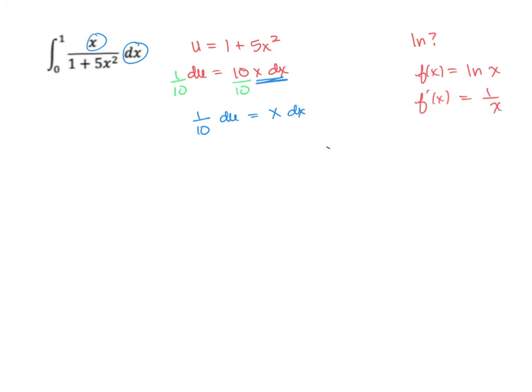So right now, we have 1 over 10 du equals x dx. I'm going to rewrite this integral. You do not have to rewrite the integral, but I'm going to rewrite it for you so you can see what's going on better. So 0 to 1, we're still in x. And I'm going to split up this. So I'm going to write 1 over 1 plus 5x squared times x, like x over 1 dx. Just so you can see, that we have our x dx, which matches this. And then we have our 1 over u, which matches this.